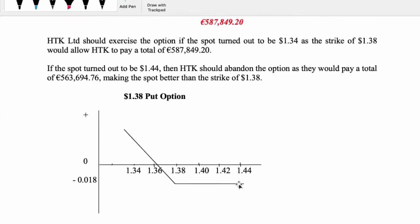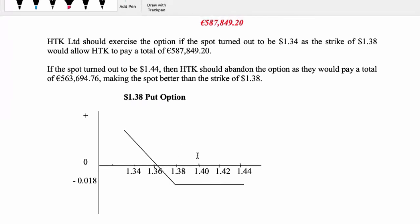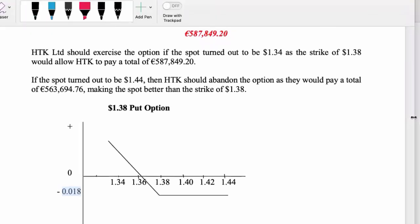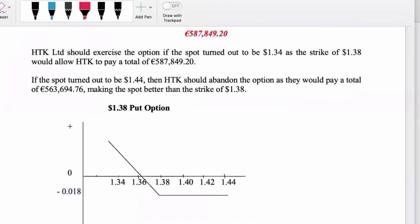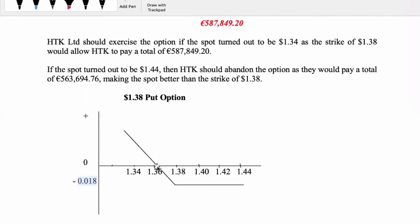We're going to illustrate that with a diagram - this is what the put looks like. In the middle I put in my strike, which was 1.38. I'm deciding on the scaling - multiples of 0.05 or 0.02. You should determine the scaling based on the premium, and the premium here is 0.018, which rounds up to about 0.02, so I decided to go with multiples of 0.02.